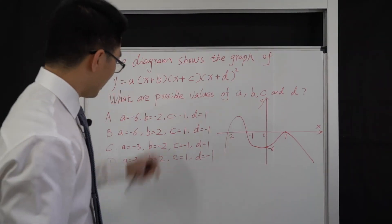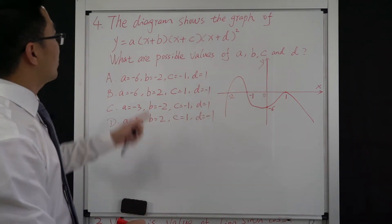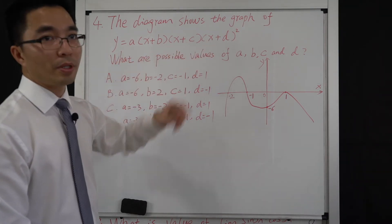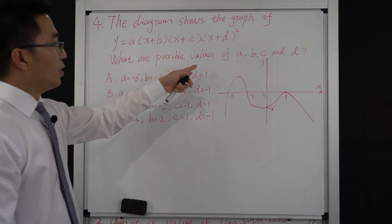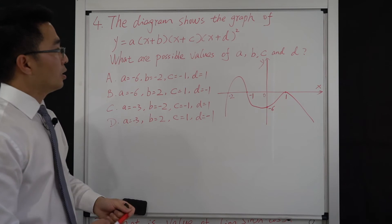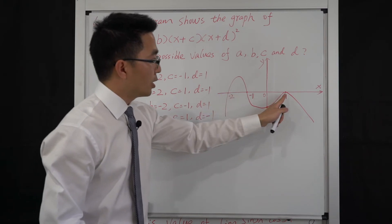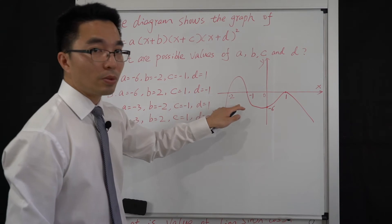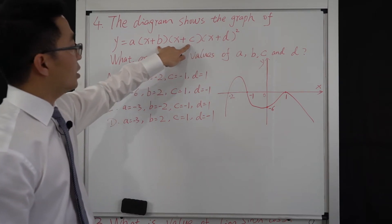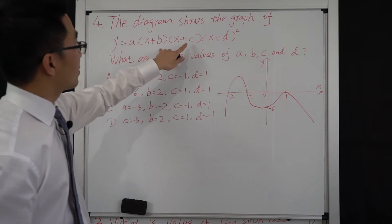Okay, let's go to question 4. The diagram shows the graph of the equation y = a(x + b)(x + c)(x + d)². The question asks for the possible values of a, b, c, d. Looking at the graph, we have two single roots and one double root. Comparing the graph with the original equation, d corresponds to the double root, while b and c are single roots.